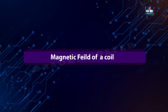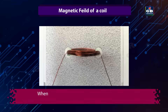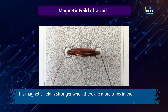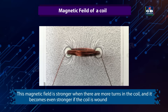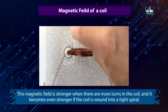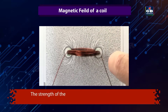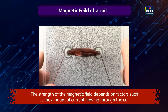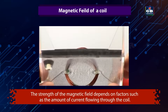Magnetic field of a coil. When an electric current flows through a coil of wire, it creates a magnetic field around the coil. This magnetic field is stronger because there are more turns in the coil, and it becomes even stronger if the coil is wound into a tight spiral. The strength of the magnetic field depends on factors such as the amount of current flowing through the coil.